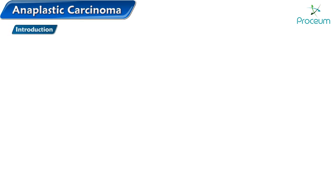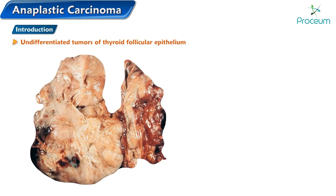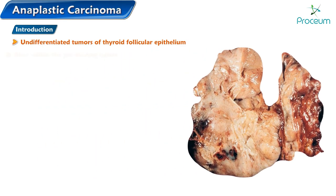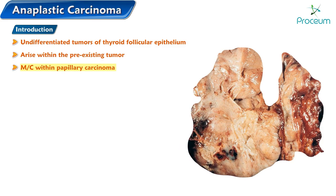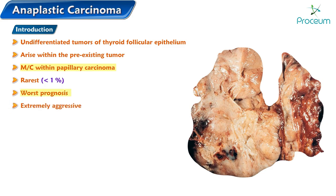Anaplastic thyroid cancers are undifferentiated tumors of the thyroid follicular epithelium. They mostly arise within a pre-existing tumor, most commonly within papillary carcinoma. Of all the thyroid tumors, anaplastic carcinoma is the rarest — less than one percent — and carries the worst prognosis, being extremely aggressive and poorly differentiated with an 80% one-year mortality rate.